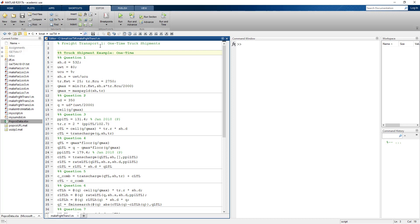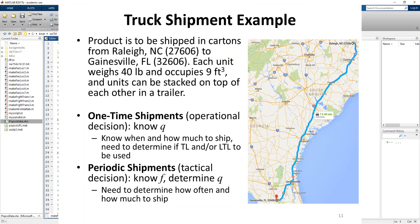We'll be looking at a truck shipment example illustrating a one-time shipment, which is an operational decision where we know the quantity and want to determine whether we should ship it as truckload or less than truckload. In this example, we'll be shipping product from Raleigh, North Carolina to Gainesville, Florida. The total distance of the shipment is 532 miles.